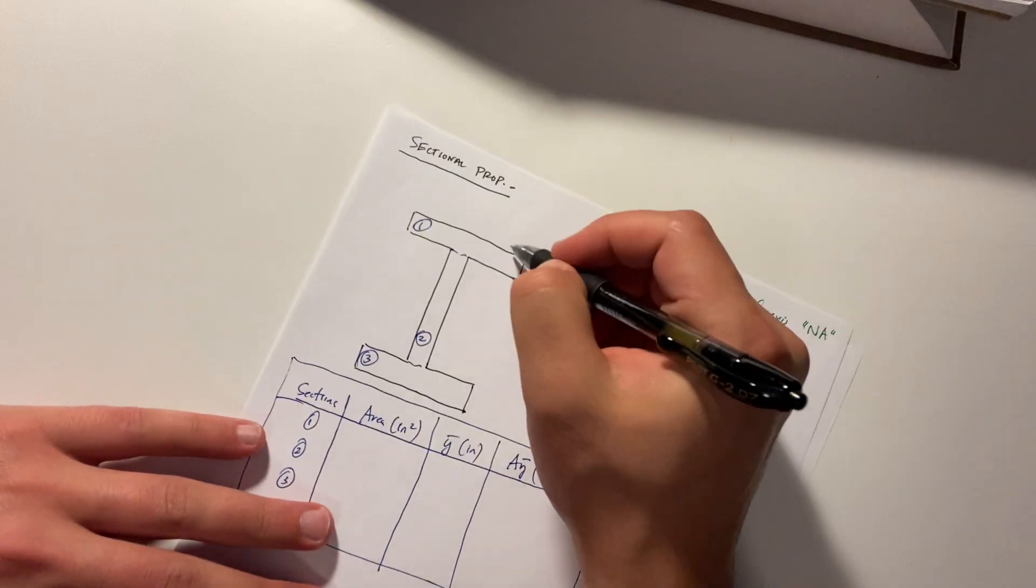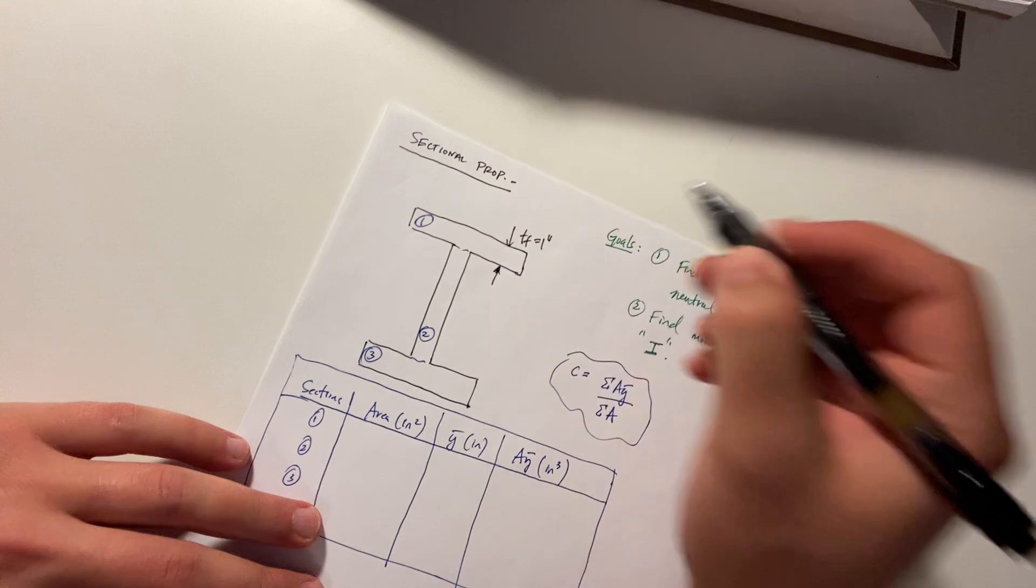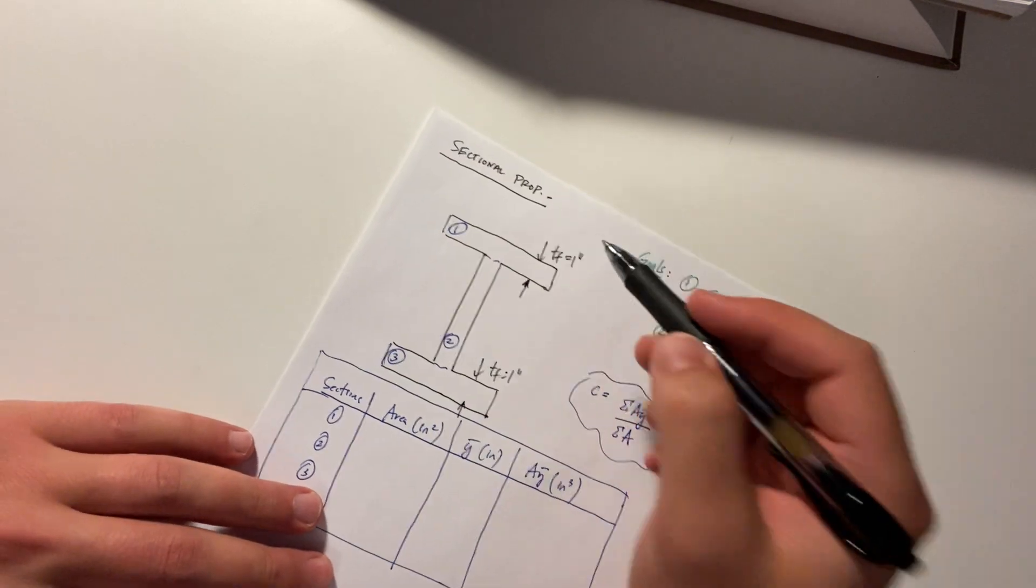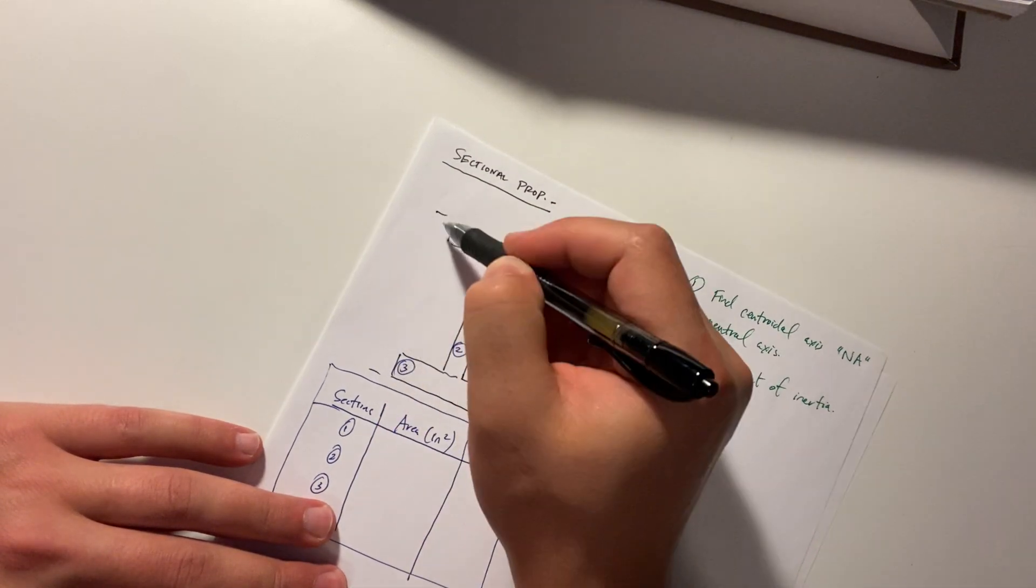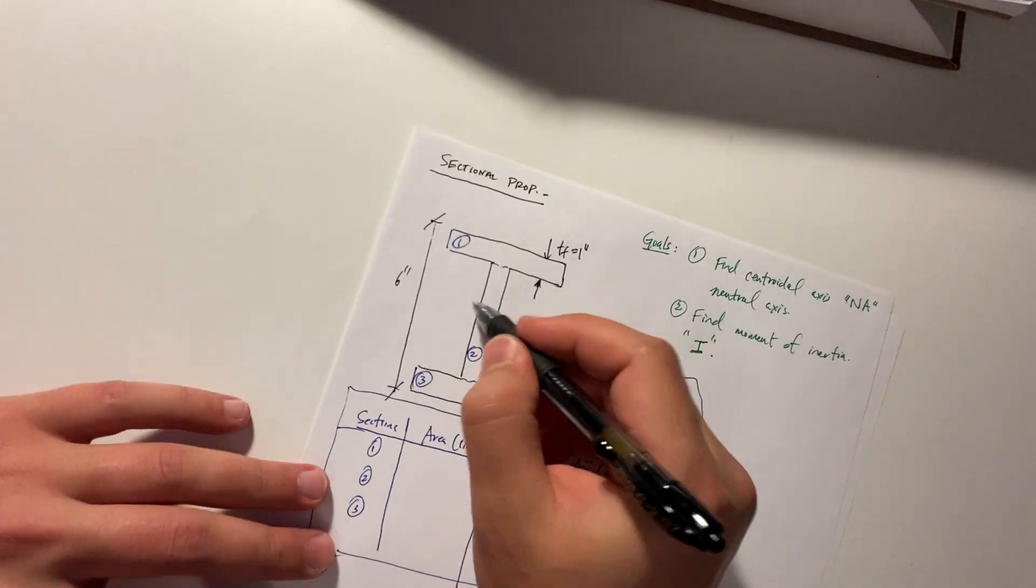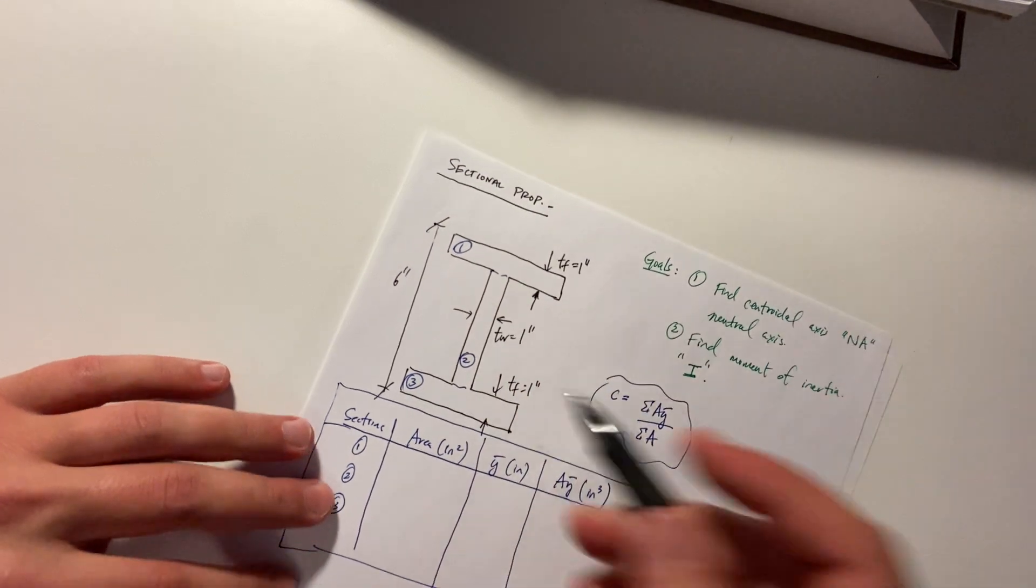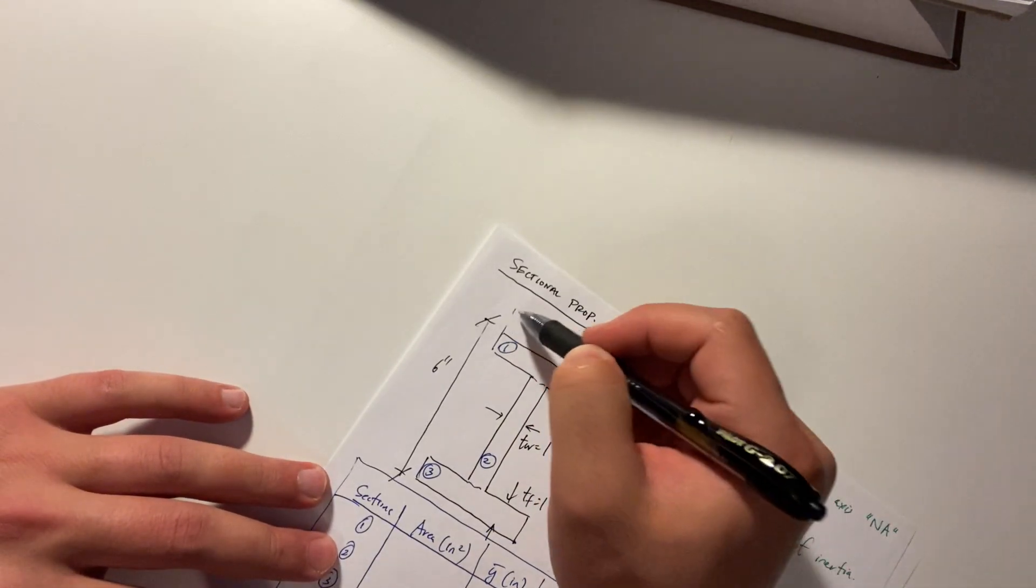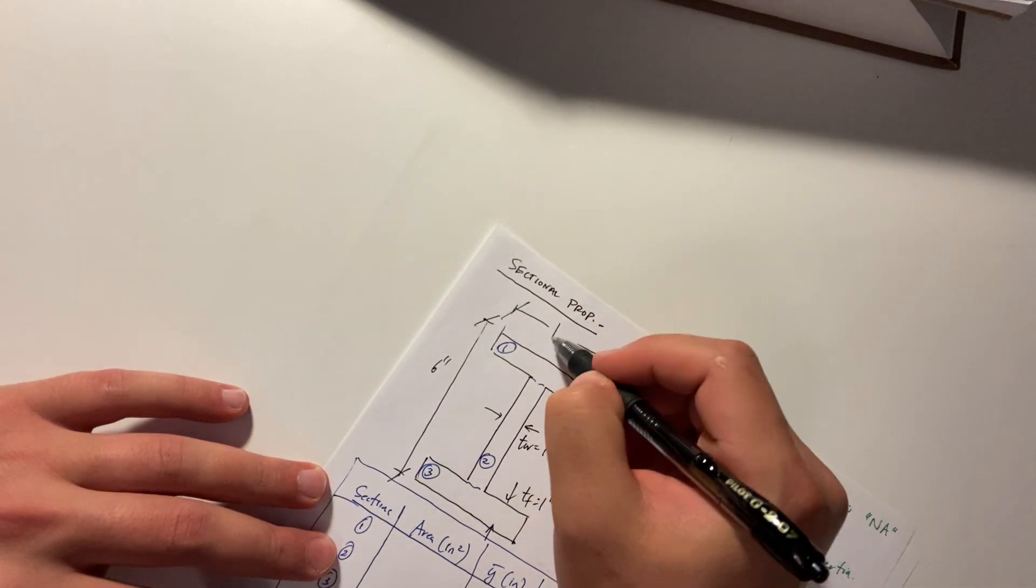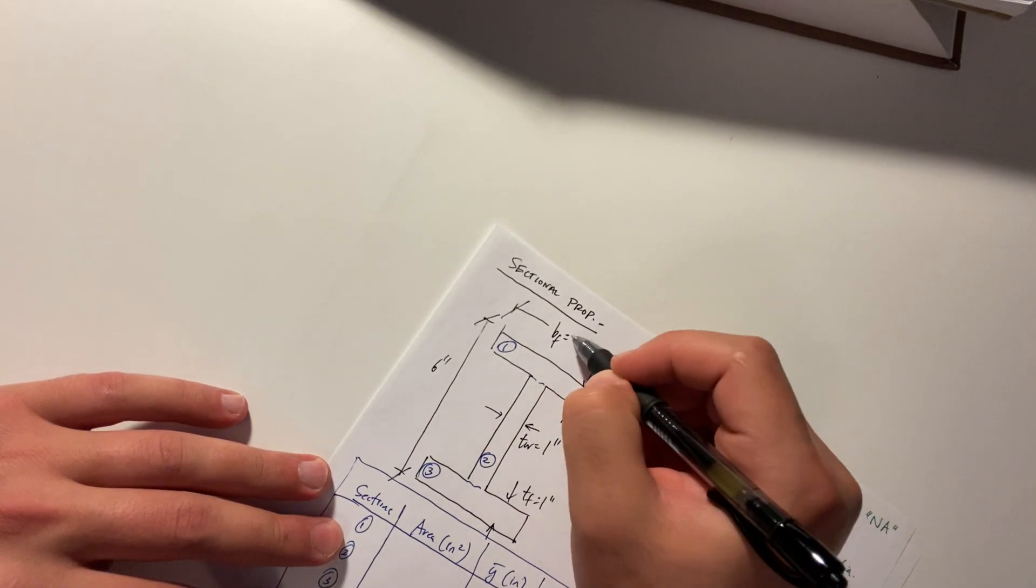So let's just give this thing some dimensions. Let's give this a thickness of flange of an inch. Another thickness of flange is an inch. Let's give this a total depth of six. And let's give, just to make the numbers easy, thickness of web an inch. And let's call this our thickness of flange. Let's make it two inches.